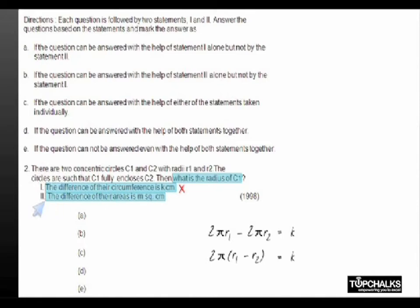So πr1² - r2² equals m, which factors to π(r1 + r2)(r1 - r2) equals m. So independently this does not give me the value of r1.